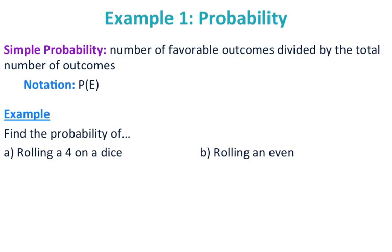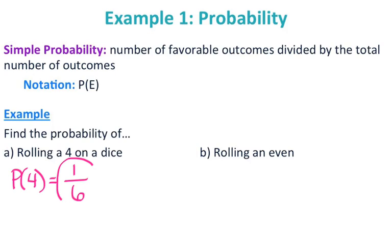Find the probability of rolling a 4 on a dice. How many ways can you get a 4 on a dice? Well, there's one way to do that, out of 6 options on a dice. So your probability of rolling a 4 is 1/6.